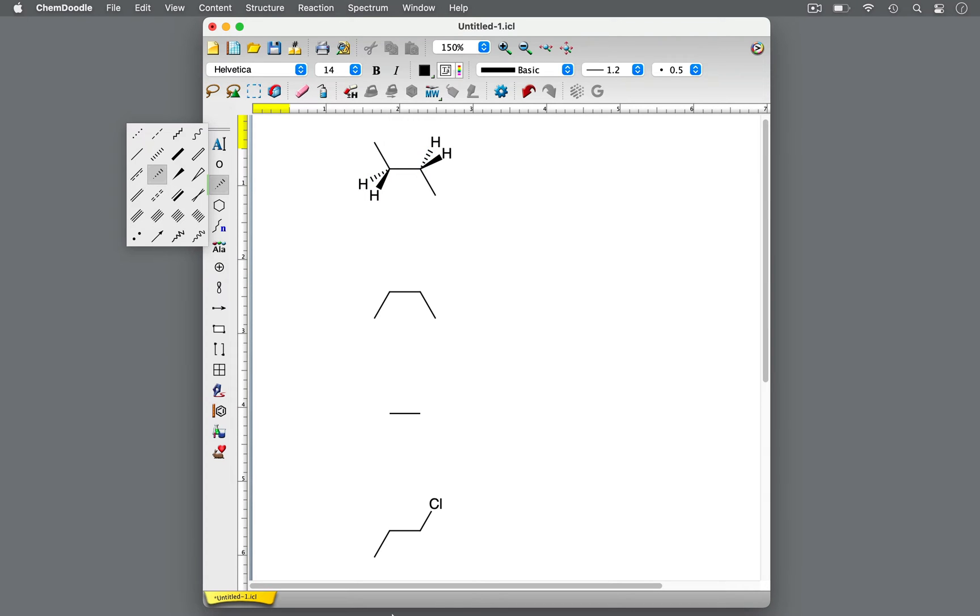Similar to the wedge and dash projection, a Newman projection is a two dimensional visual representation of the three dimensional conformations of a molecule about a sigma, or single bond. It's particularly useful in illustrating the conformational isomers, or conformers, of alkanes.